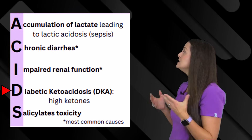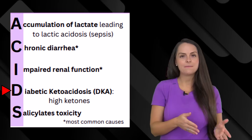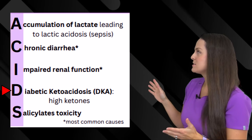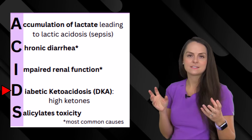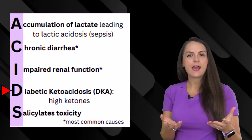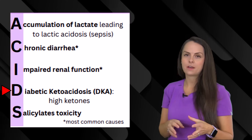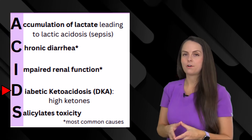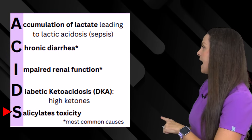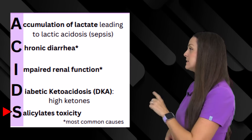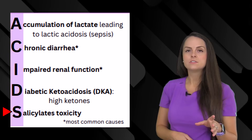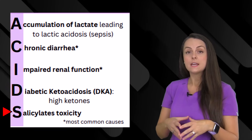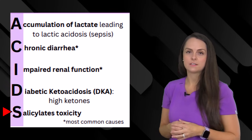D is for DKA, which stands for diabetic ketoacidosis. With this condition, we have an increase of ketone production, which is acidic and causes our blood pH to fall. And lastly, S is for salicylate toxicity. These are acidic substances, so if a patient has too much of these in their system, it could cause acidosis.